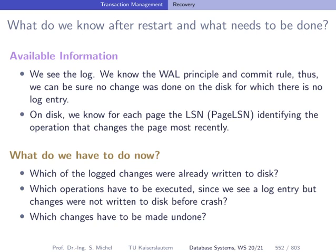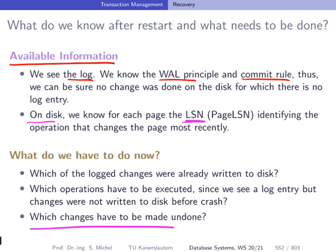After restart, what do we know and what must we do for recovery? The information available is first the log file, which was created according to the write-ahead log principle and the commit rule — so we know that every change made to a page on disk has a log entry. On disk, we know for every page the log sequence number of the most recent change. We then go through the log to see which changes are not yet in our database and apply the redo information from log entries. Finally, we identify changes that need to be undone for loser transactions.